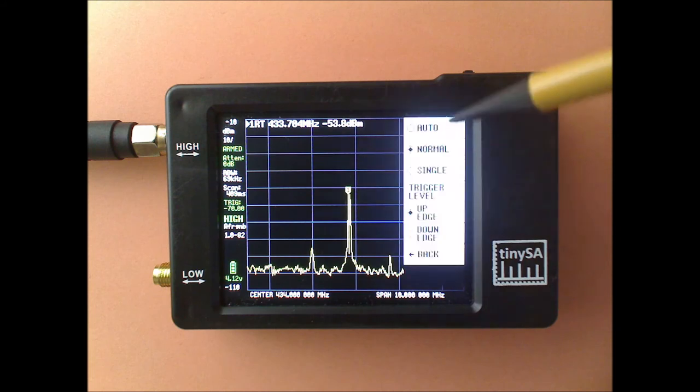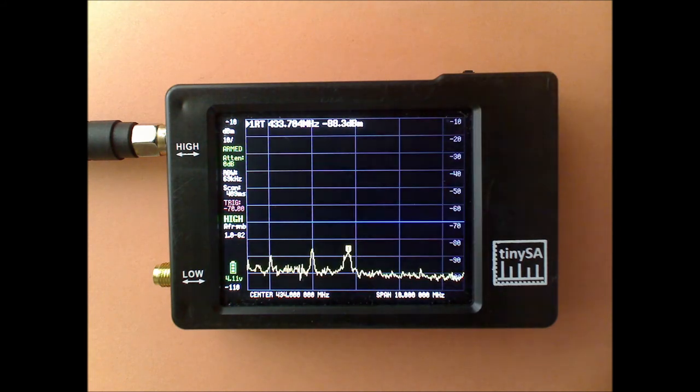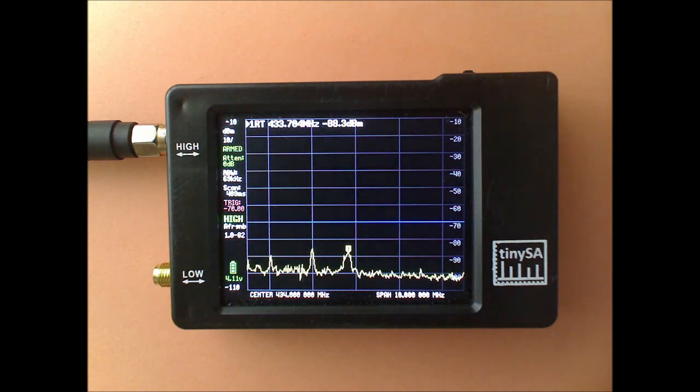But of course, if you only want to capture it once, you can put it also in single trigger mode. Here you can see it is armed by the text armed there. And then once a signal has been seen that is stronger than the threshold, the display goes into pause to notify that the signal has been captured. And now it's easy to see the strength of the signal and the frequency of the signal.